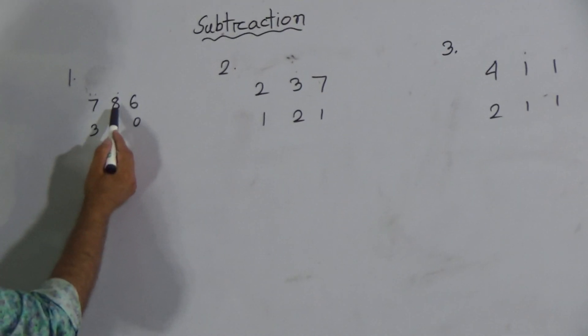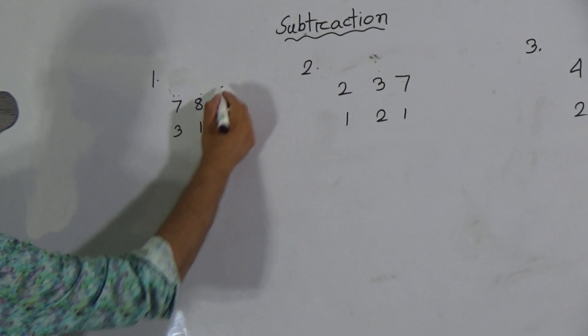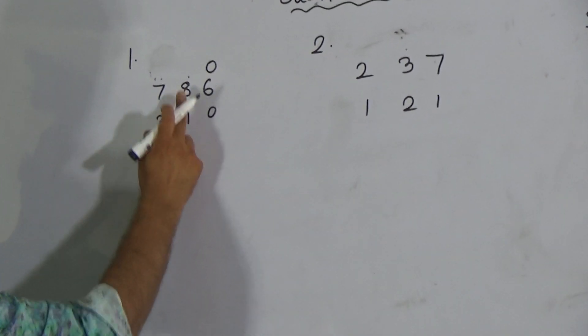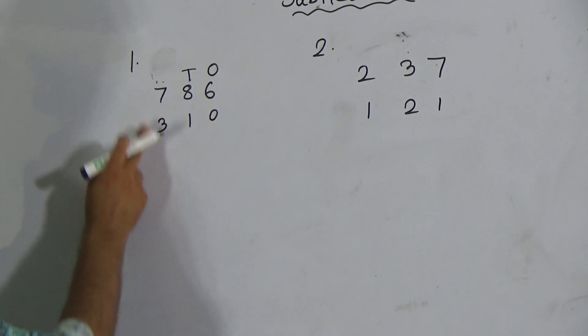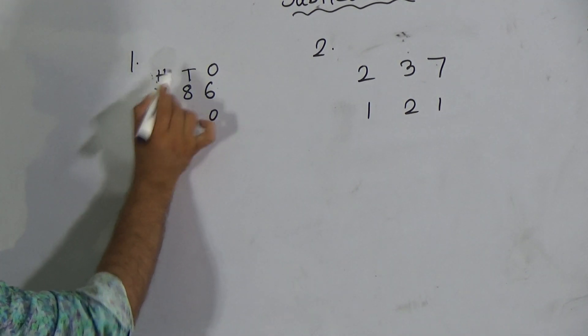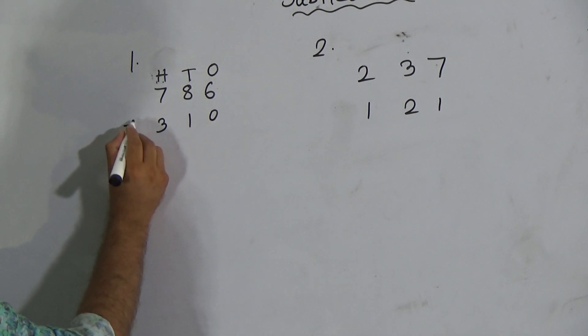Look here, there are two numbers: 786 and 310. 6 and 0 both are ones place digits, 8 and 1 both are tens place digits, and 7 and 3 both are hundreds place digits. We have to keep here a minus sign for subtracting and draw a line.